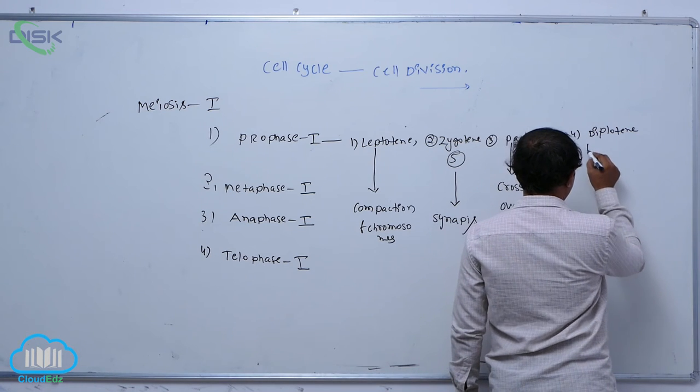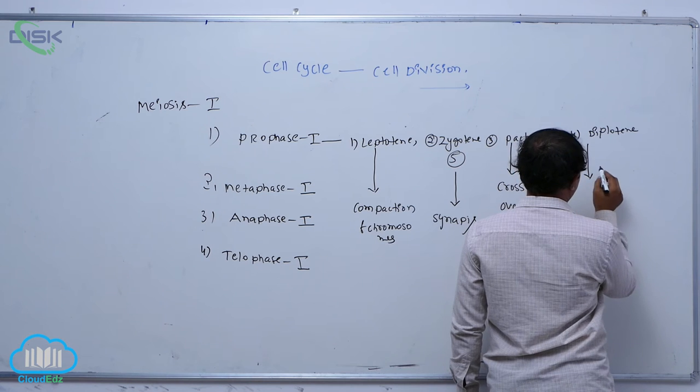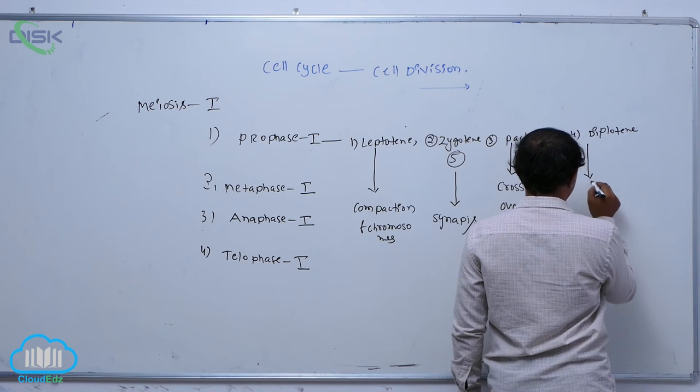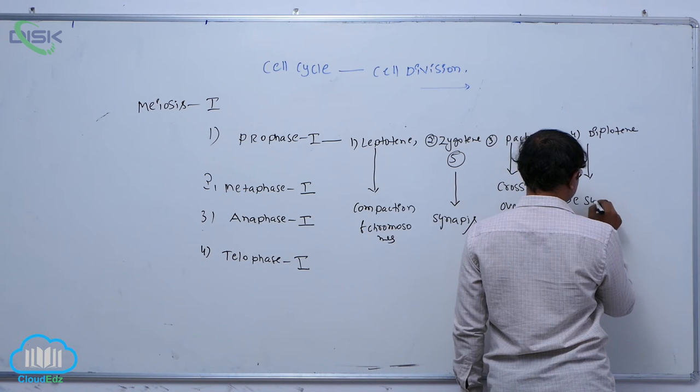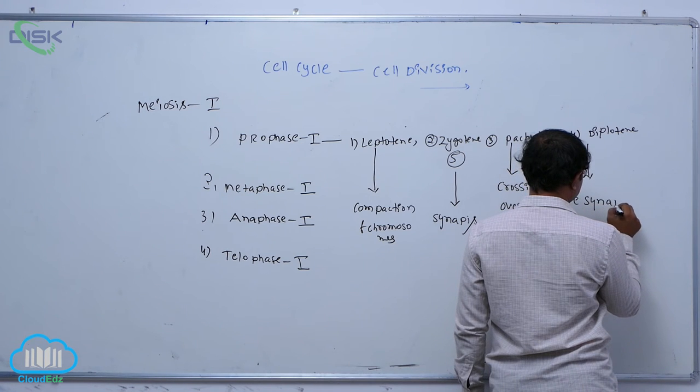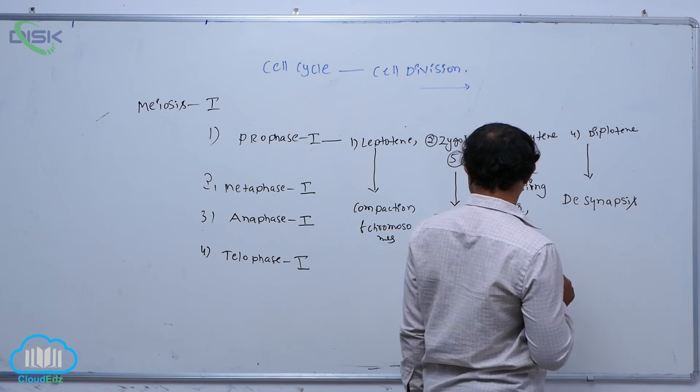After that, diplotene. So diplotene's key point is known as the desynapsis process.